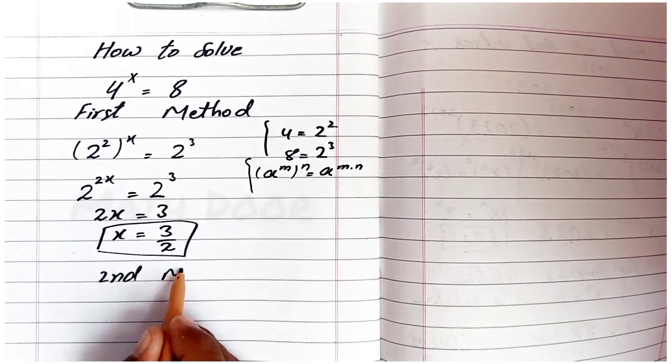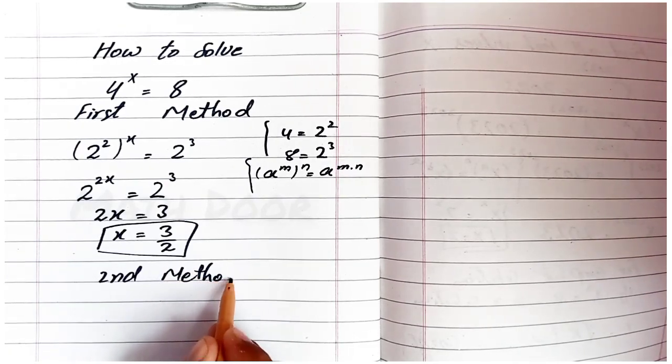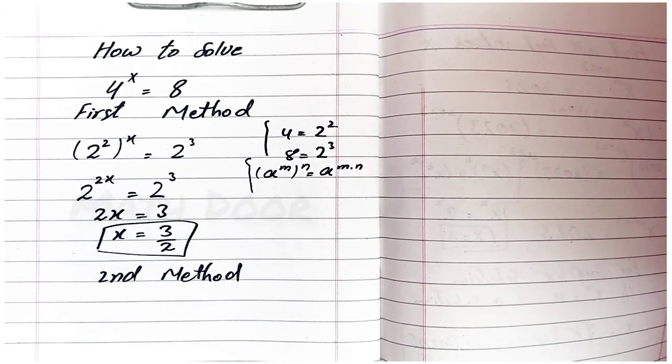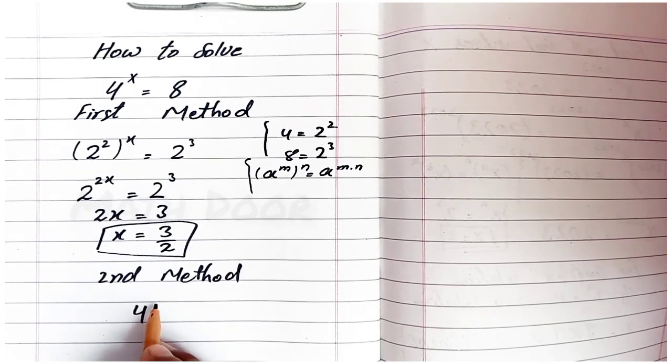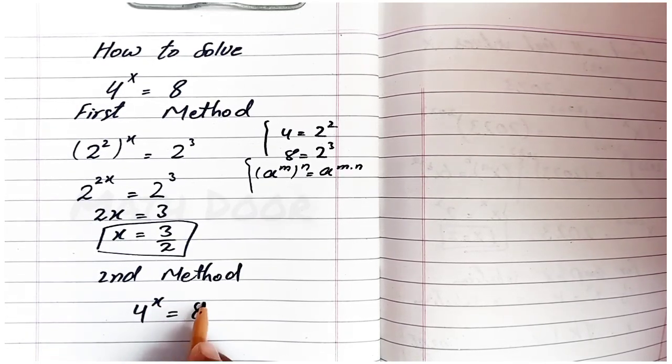But there's a second method which is also easier. Here, take 4^x = 8.